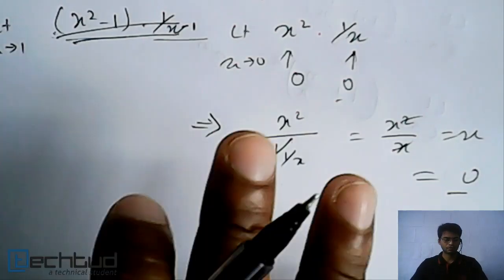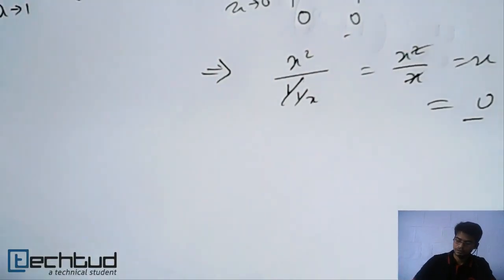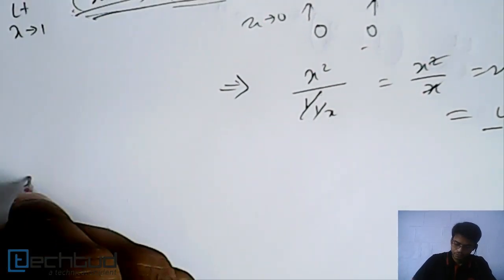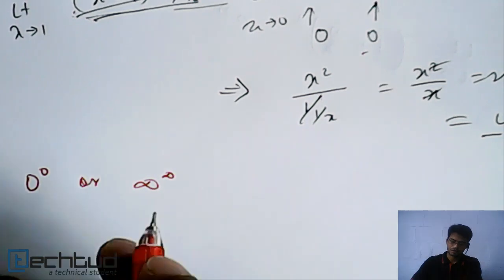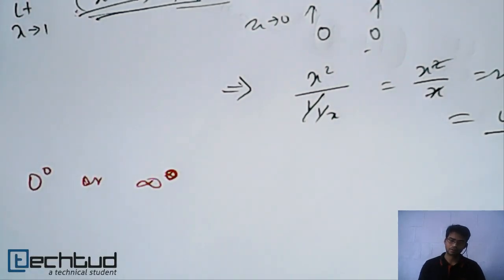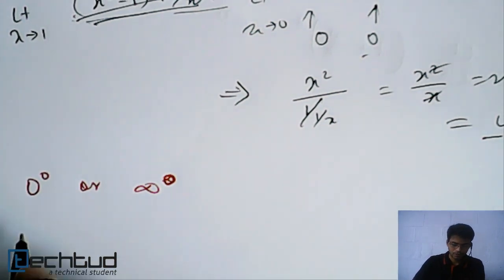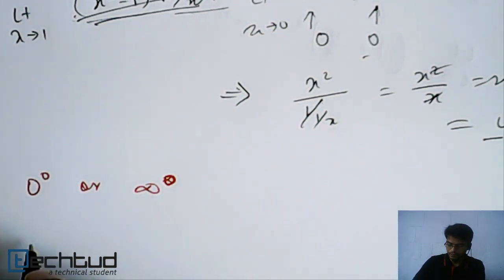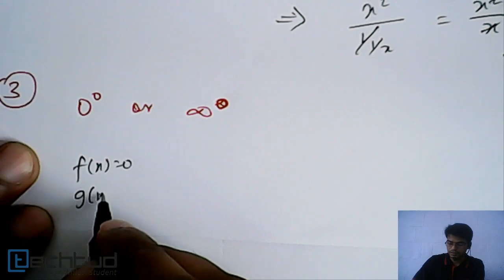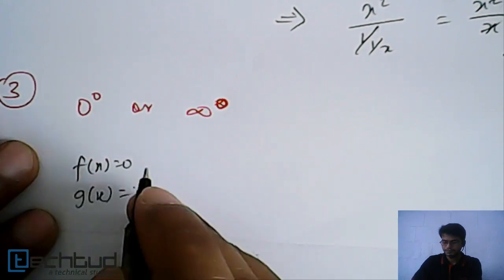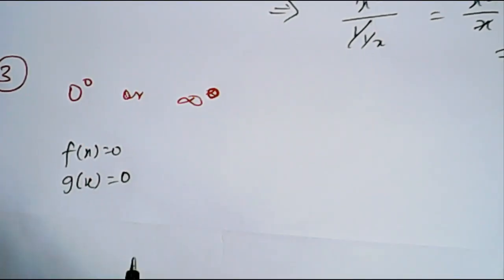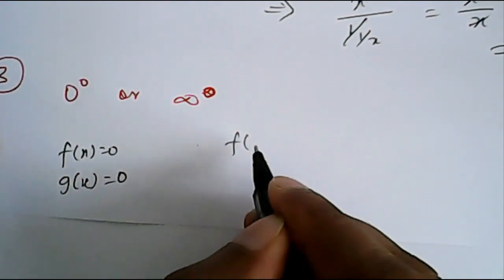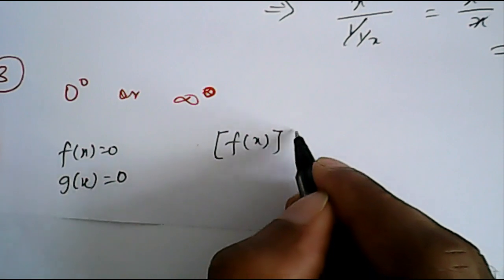Now, we have one more form which is 0 to the power 0 or infinity to the power infinity, infinity to the power 0, 0 to the power 0 or infinity to the power 0. So if we have a function, for example, let's say f(x) is equal to 0 again and g(x) is equal to again 0.